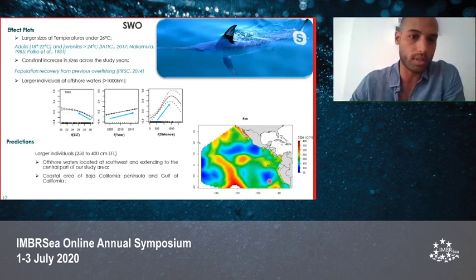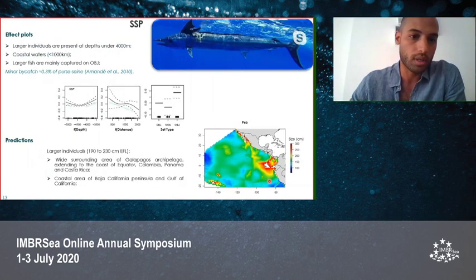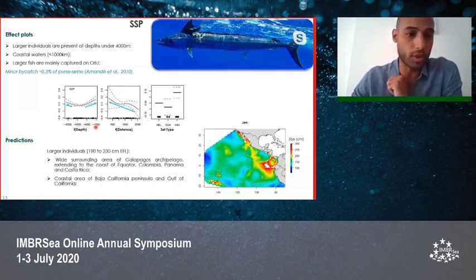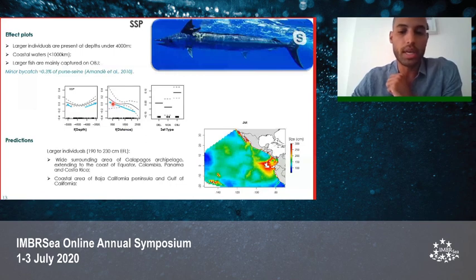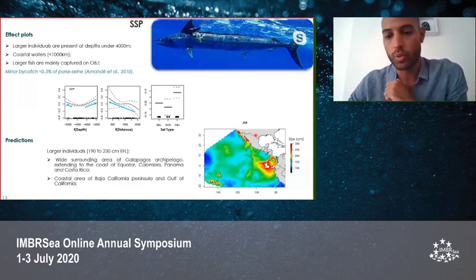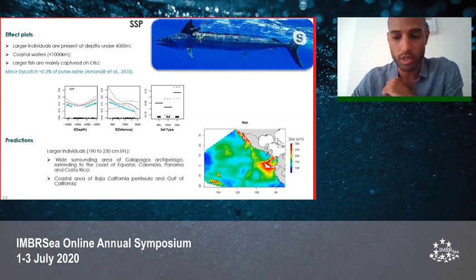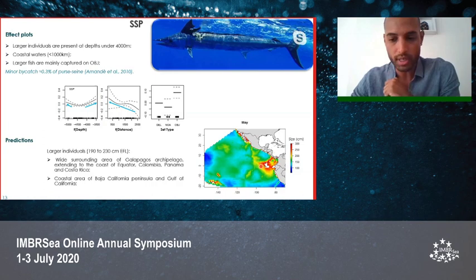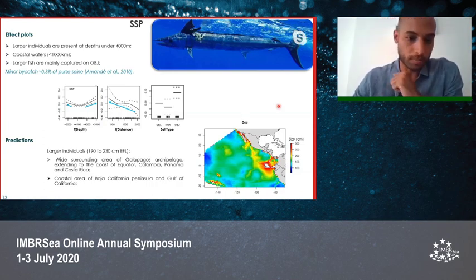For the short-bill spearfish, large individuals were present in areas with depths under 4,000 meters, mainly in coastal waters, and were predominantly caught in object set types. The prediction maps confirm this pattern, with large individuals concentrated in coastal regions of the continental landmasses and around oceanic islands such as the Galápagos Archipelago and the French Polynesia region.